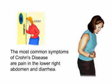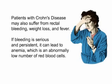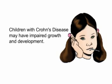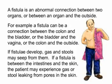The most common symptoms of Crohn's disease are pain in the lower right abdomen and diarrhea. Patients with Crohn's disease may also suffer from rectal bleeding, weight loss, and fever. If bleeding is serious and persistent, it can lead to anemia, which is an abnormally low number of red blood cells. Children with Crohn's disease may have impaired growth and development. A fistula is an abnormal connection between two organs, or between an organ and the outside.